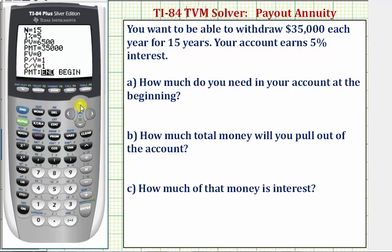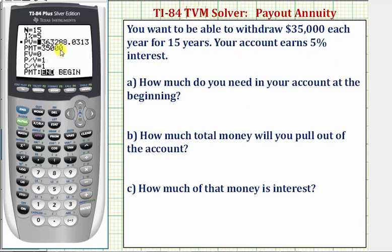Now we go back up to present value, which we're solving for, and we press Alpha, Enter. Notice how it's negative, because you have to pay this amount today in order to withdraw $35,000 each year for the next 15 years. So for Part A, how much do you need in your account at the beginning? That would be $363,288.03.